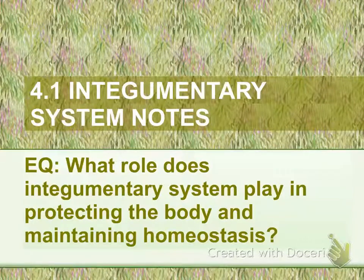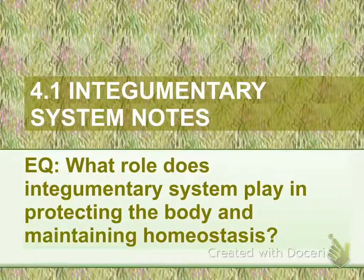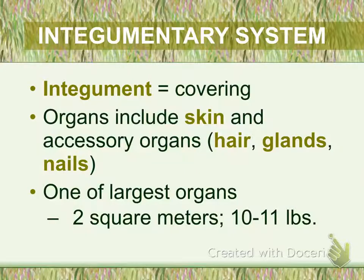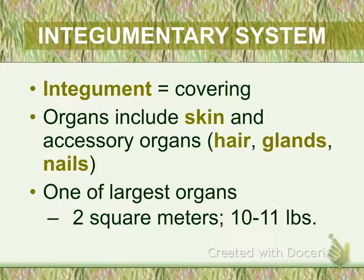This is 4.1 Integumentary System Notes. The essential question is: what role does the Integumentary System play in protecting the body and maintaining homeostasis? The word integument literally means a covering. The Integumentary System is divided into the major organ, which is the skin, and the accessory organs, which are parts of or structures within the skin that have a different function.